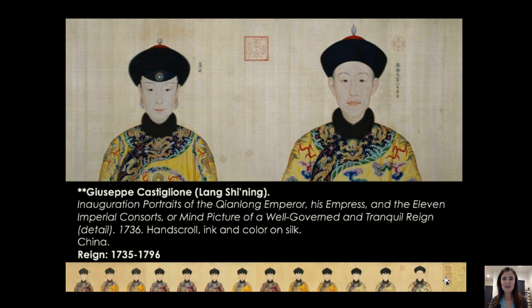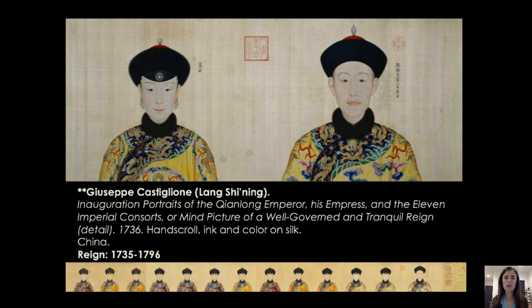Hand scrolls are read from right to left. You would start over on the right and encounter the cinnabar seals, any decoration at the start of the scroll, then see the young Qianlong Emperor, with the sense that you're starting off a great new imperial rule. Then you encounter the Empress, and then moving on to his consorts. The Emperor had his Empress, consorts of various levels, and concubines — multiple wives or consorts — both to create diplomatic ties and to ensure an heir to become the next Emperor.